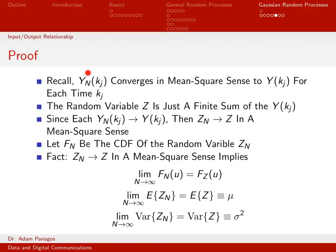We already know that y_N at time k_j converges in a mean square sense to y at time k_j for any time k_j. Since z_N is just a finite linear combination of y_N's, and each y_N converges in mean square to y, it follows that z_N converges to z in a mean square sense. We're skipping some details here, but the basic point is that mean square convergence of the y_N's implies mean square convergence of z_N to z.